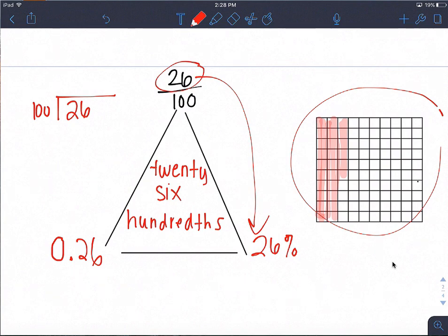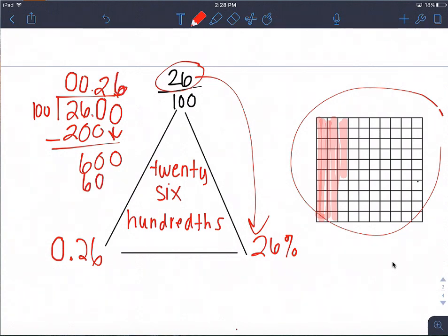One hundred doesn't go into two. It doesn't go into six. But, it does go into two hundred sixty. There would be two hundreds. And, if we subtract, we're left over with sixty. Well, one hundred doesn't go into sixty. But, it does go into six hundred. Six times, which would be six hundred. And, if I subtract, I'm left over with zero. So, that matches there.